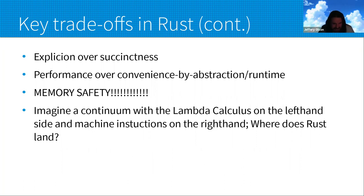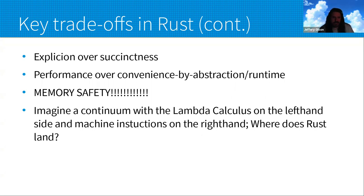Wrapping up on the trade-offs: if you imagine a continuum with the land of calculus on the left-hand side and machine instructions on the right, for me Rust comes down somewhere in the center. It includes a lot of stuff in its type system and conveniences that are obviously descended from the ML line of languages. Besides C++, Graydon Hoare himself is a big OCaml guy. But in the end, again and again, where it has to, Rust always goes on the side of coming down more towards C and C++ as it has to do with memory management. For that reason there's a bunch of functional stuff that you'd have otherwise that kind of gets kicked out.